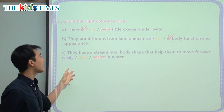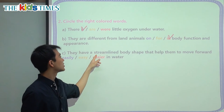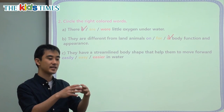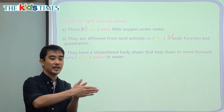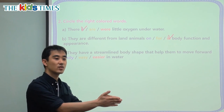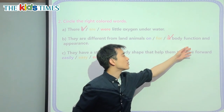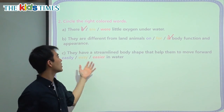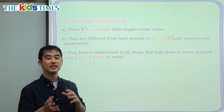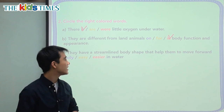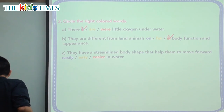Grammar Question C: They have a streamlined body shape that helps them move forward blank in water. Their body shape is not like a triangle — it's more very straight like this, streamlined. So they can move more easily in the water. The main verb here is 'to move.' When we describe how they move, we need an adverb. Quickly, slowly, happily — these are all adverbs, words that describe the verb.